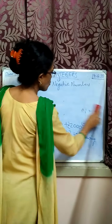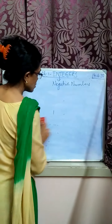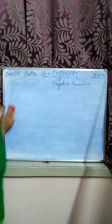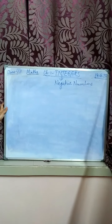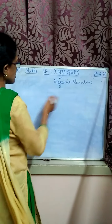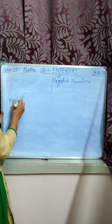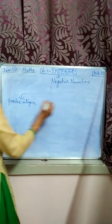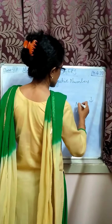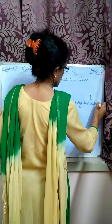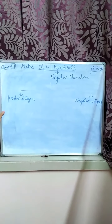So it is clear why we are studying negative numbers. Now, what are the properties of negative numbers? What operations can we do? How do we add them? How do we subtract them? That we will study. We first specify integers as positive integers and negative integers.